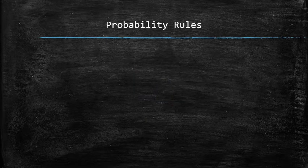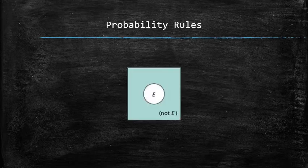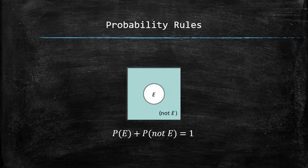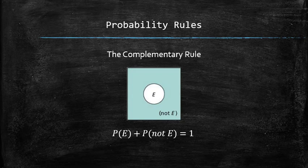Finally, we will discuss the complementary rule. Consider an event E and its complementary event as shown on the Venn diagram. Since the total area is equal to 1, we have P(E) + P(E complement) = 1. This relation is called the complementary rule. We can use it to find the probability of the complement of E by subtracting P(E) from 1.